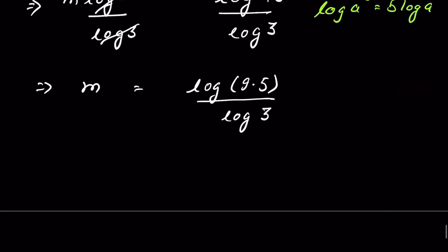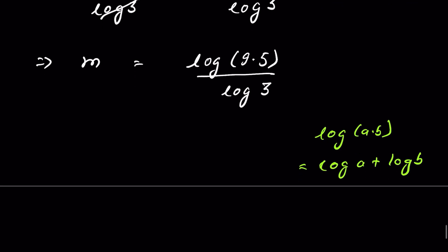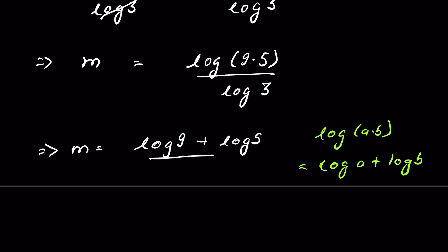Now another rule for log is log a times b is equal to log a plus log b. So this will be m is equal to log 9 plus log 5, all upon log 3.